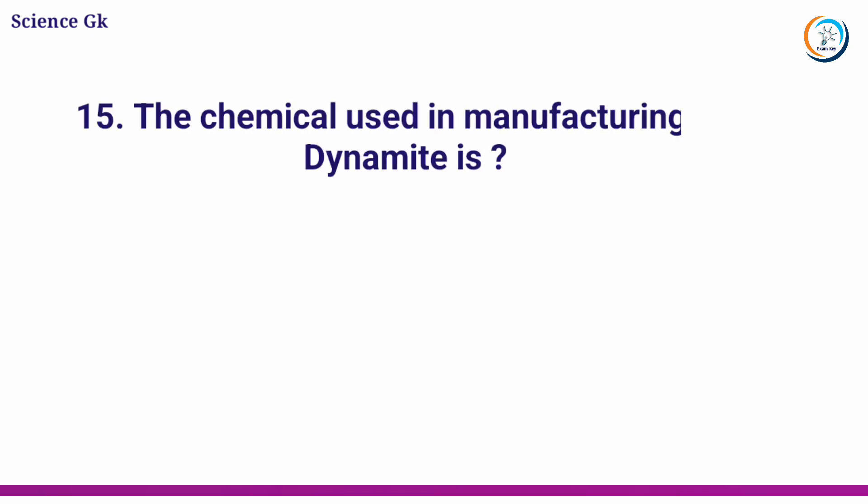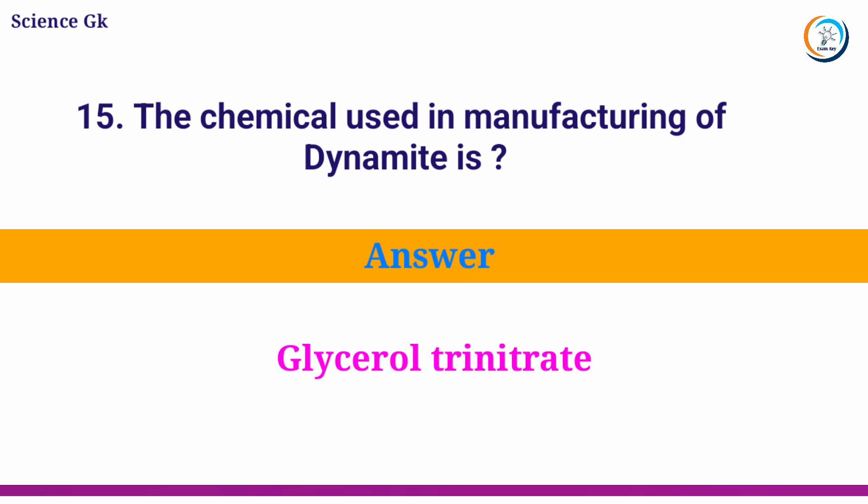The chemical used in the manufacturing of dynamite is? Answer: glycerol trinitrate.